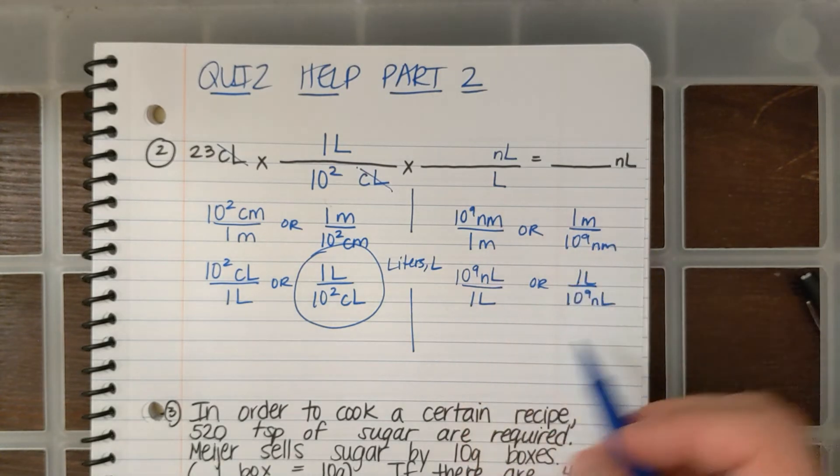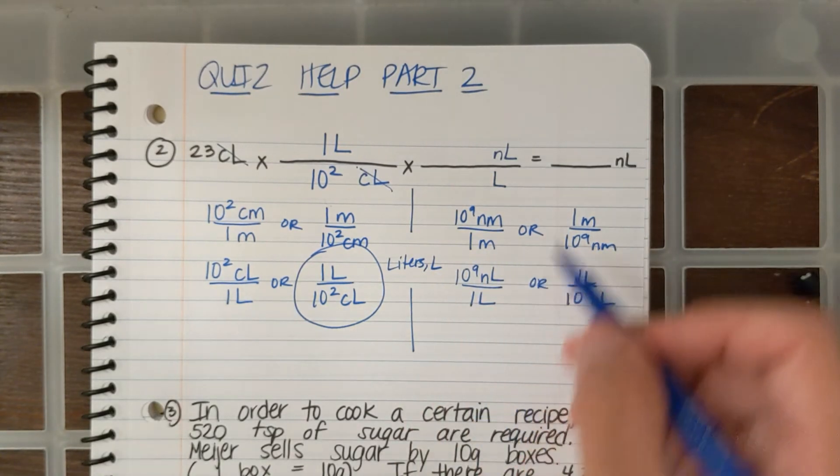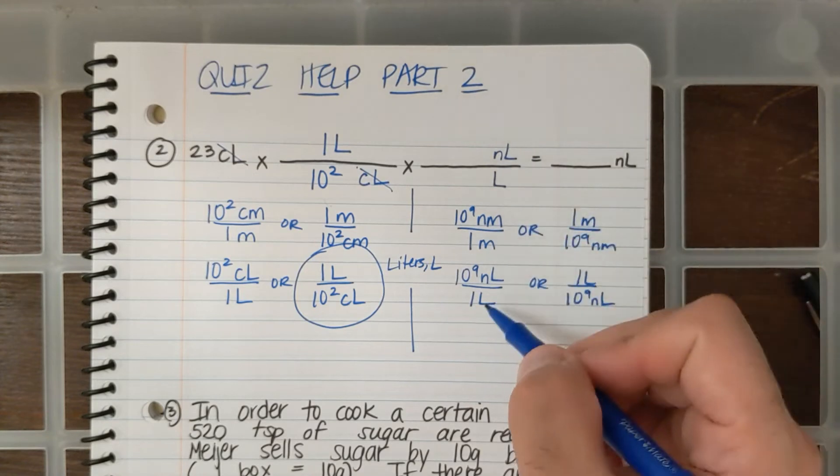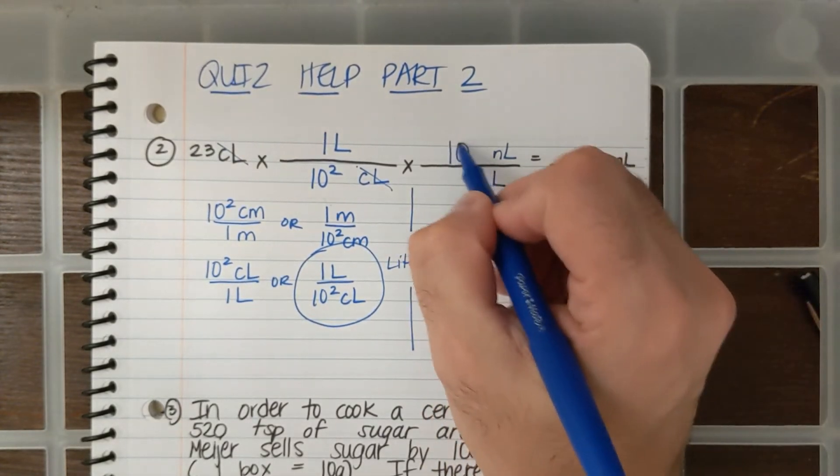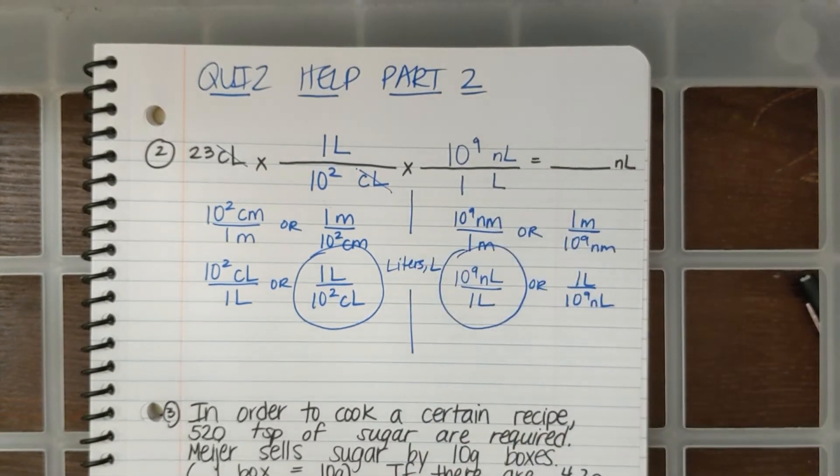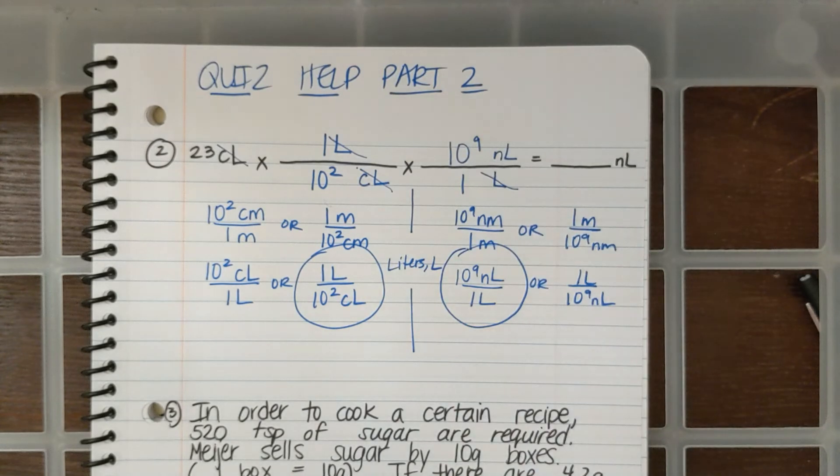Nanoliters goes on top. And so which is the only other conversion factor that has NL on top and L on the bottom? And that's this one. 10 to the ninth nanoliters is 1 L. And liters will end up canceling out, and I'll be left with nanoliters.